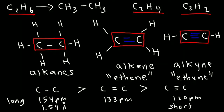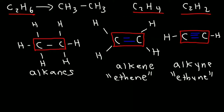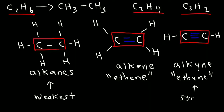Now let's talk about bond strength. Which bond is the strongest — the single bond, the double bond, or the triple bond? The single bond is the weakest. The triple bond is the strongest. Why? It's easier to break one bond instead of three bonds. Imagine trying to break a pencil — it's easier breaking one pencil than trying to break three pencils at a time. Three bonds are stronger than one.